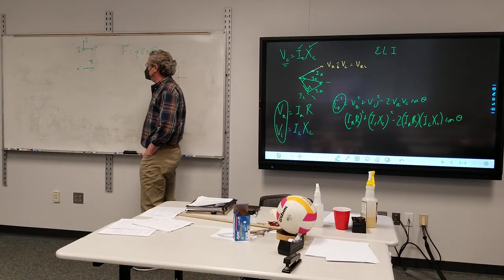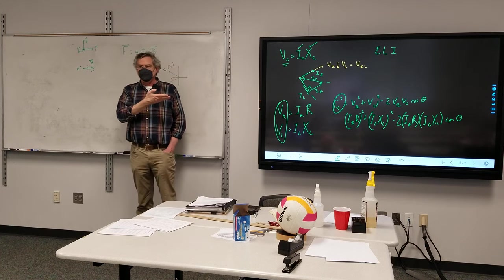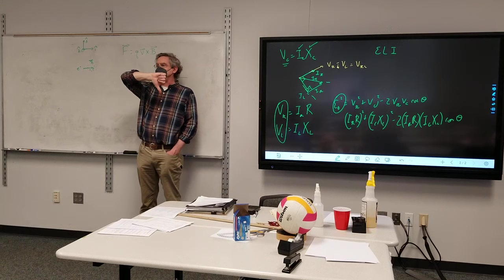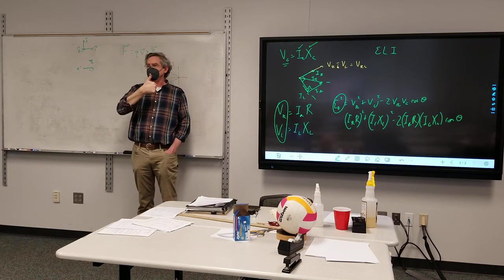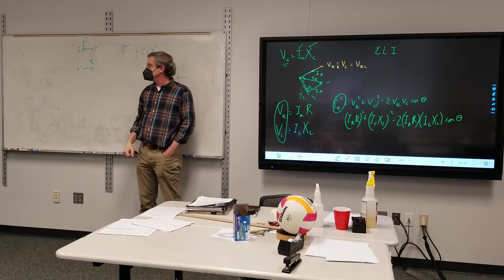V cross V. Put my hand in the direction of V. My fingers will bend towards V. Thumb points down, but Q is negative, so that's close in. So it's forced up.